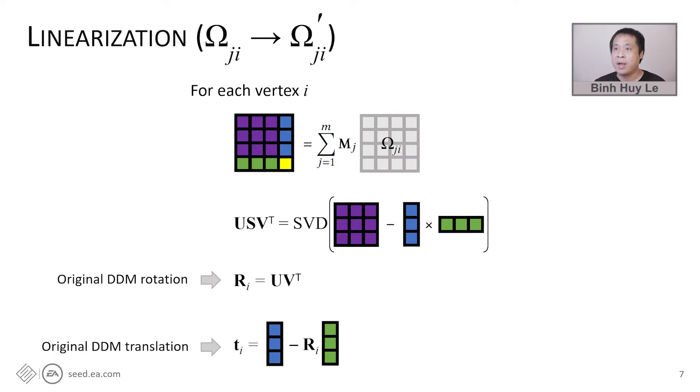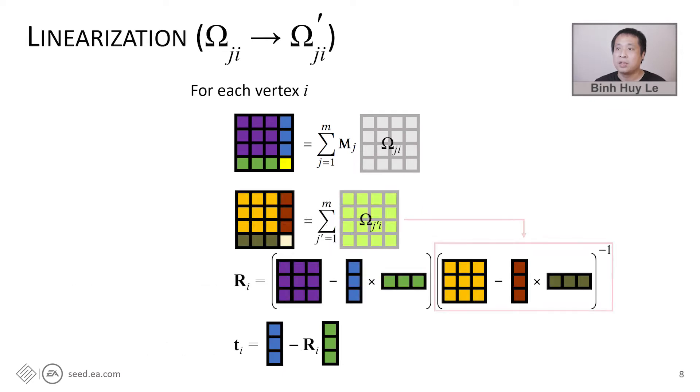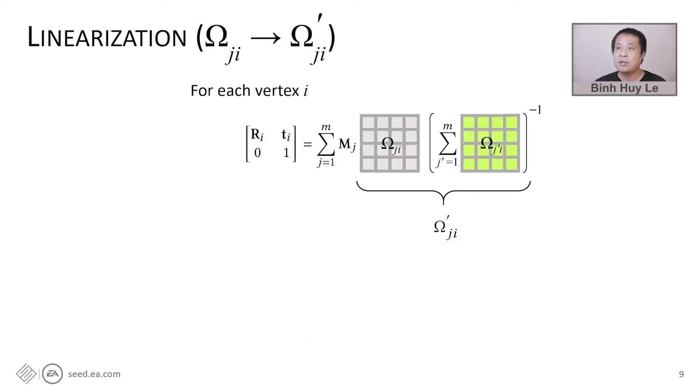Our first map is the linearization map, recalling the original DDM model. For each vertex i, we need to compute the rotation r sub i by singular value decomposition to orthogonalize the matrix. But this is difficult to formulate and optimize the objective function with this nonlinear operator. So we make a linear approximation by multiplying the inverse of the 3 by 3 matrix, which is computed from the sum of all DDM weights of vertex i. Performing simplification, we can derive a linear formulation to compute the transformation of vertex i. And we can group this into a 4 by 4 matrix omega prime. This computation can be viewed as a map from a 4 by 4 matrix omega to a new 4 by 4 matrix omega prime.